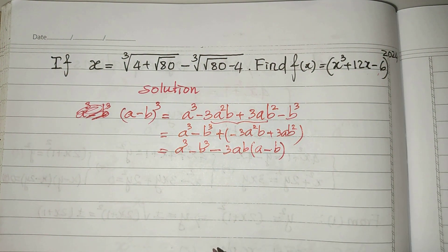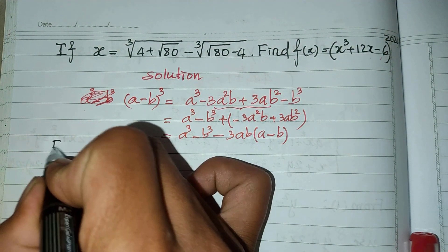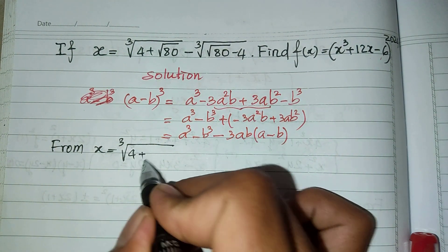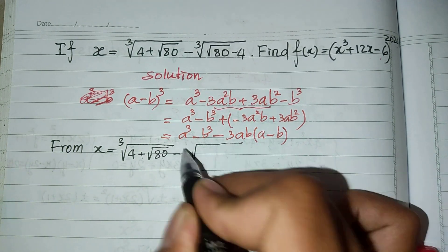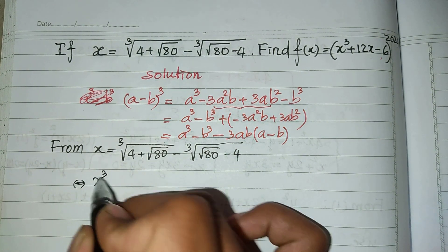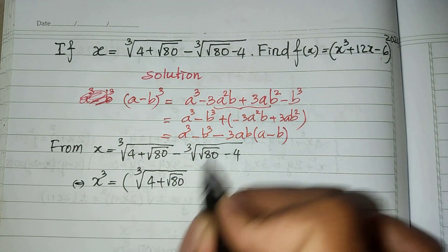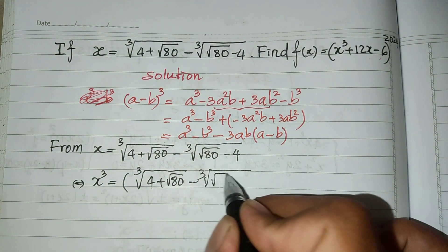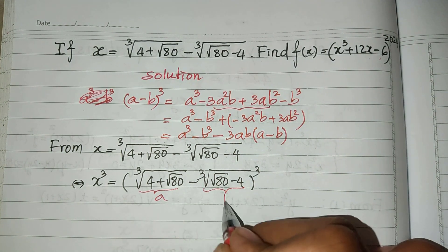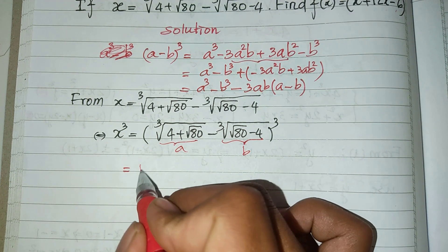So from this expression, we identify: a is the cube root of (4 plus square root of 80), and b is the cube root of (square root of 80 minus 4). This expression equals a power 3 minus b power 3. We can see that a is this term and b is this term, so a power 3 equals (4 plus square root of 80) and b power 3 equals (square root of 80 minus 4).